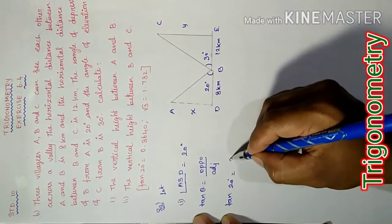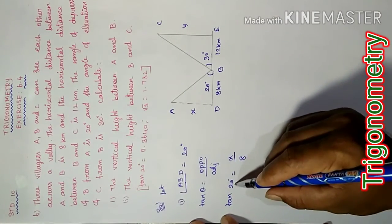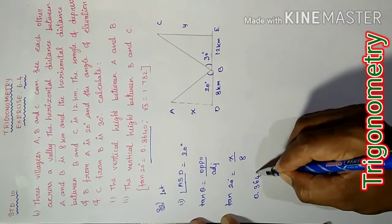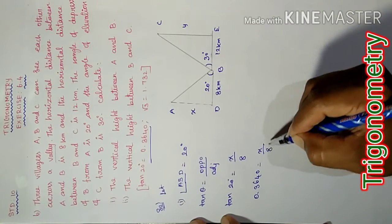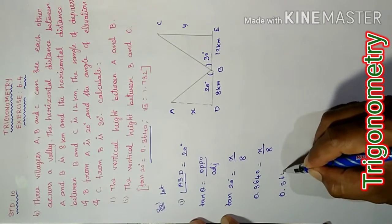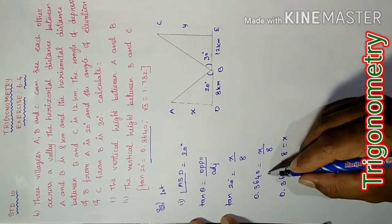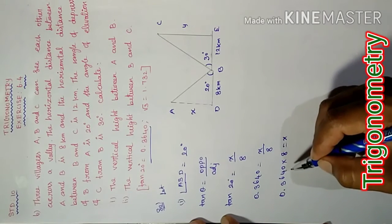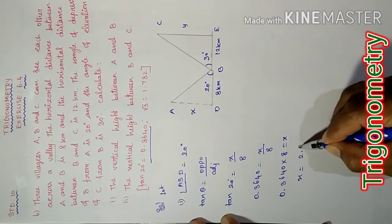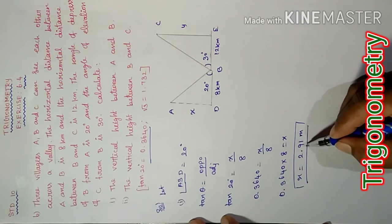0.3640 equal to x by 8. Cross multiplication, therefore 0.3640 into 8 equal to x. X equal to 2.91 meters.